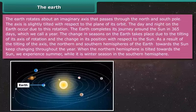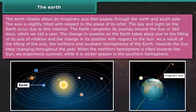The change in seasons on the earth takes place due to the tilting of its axis of rotation and the change in its position with respect to the sun. As a result of the tilting of the axis, the northern and southern hemispheres of the earth towards the sun keep changing throughout the year. When the northern hemisphere is tilted towards the sun, we experience summer while it is winter season in the southern hemisphere.